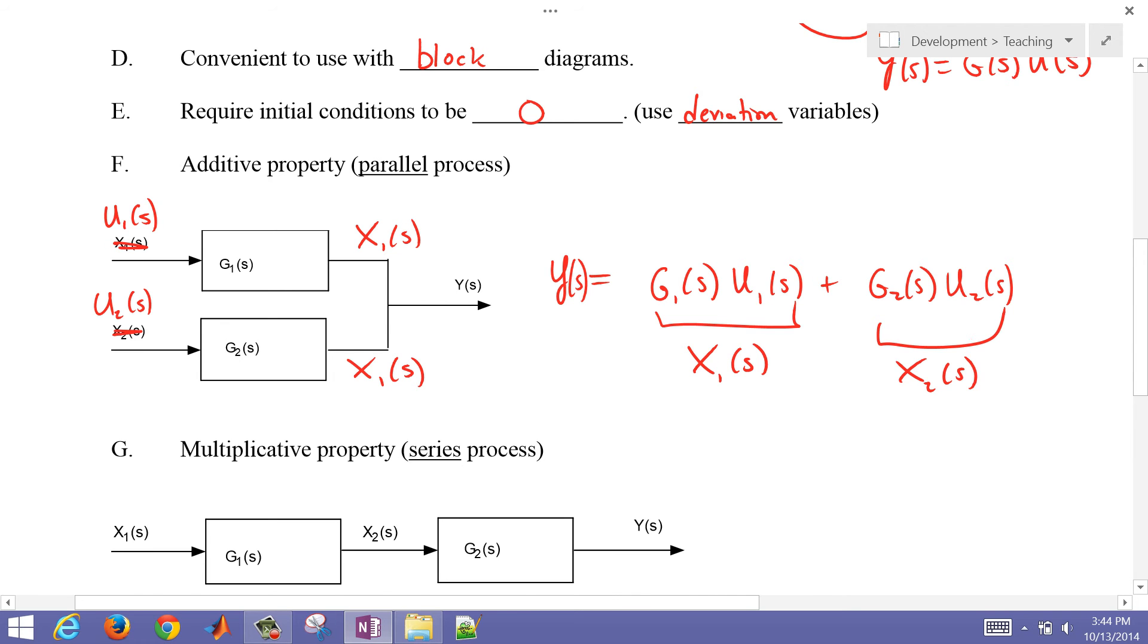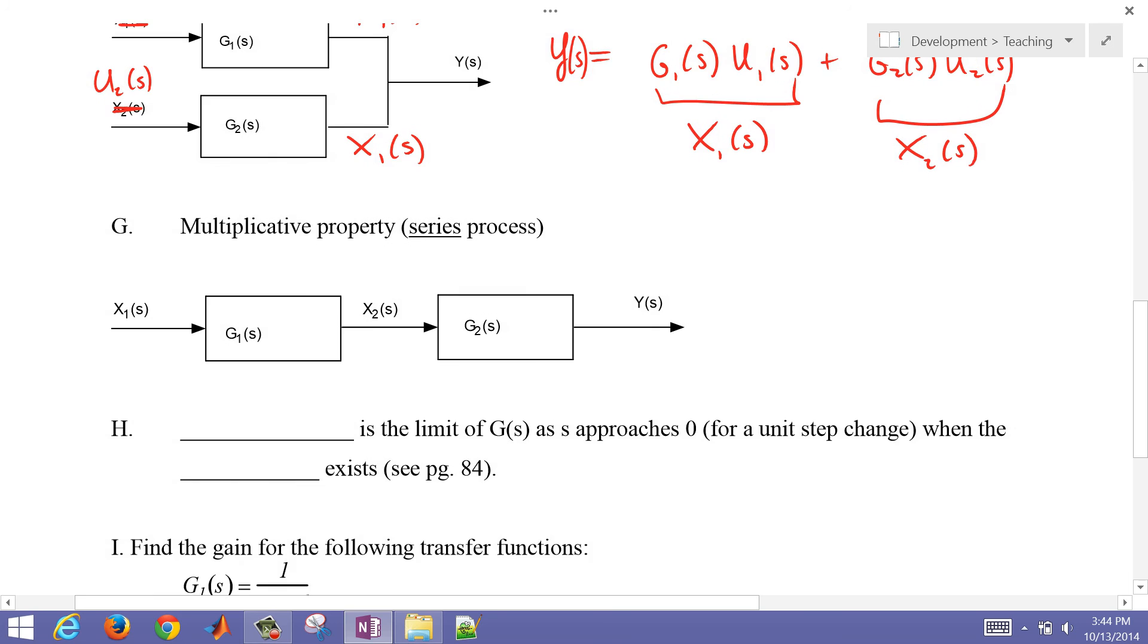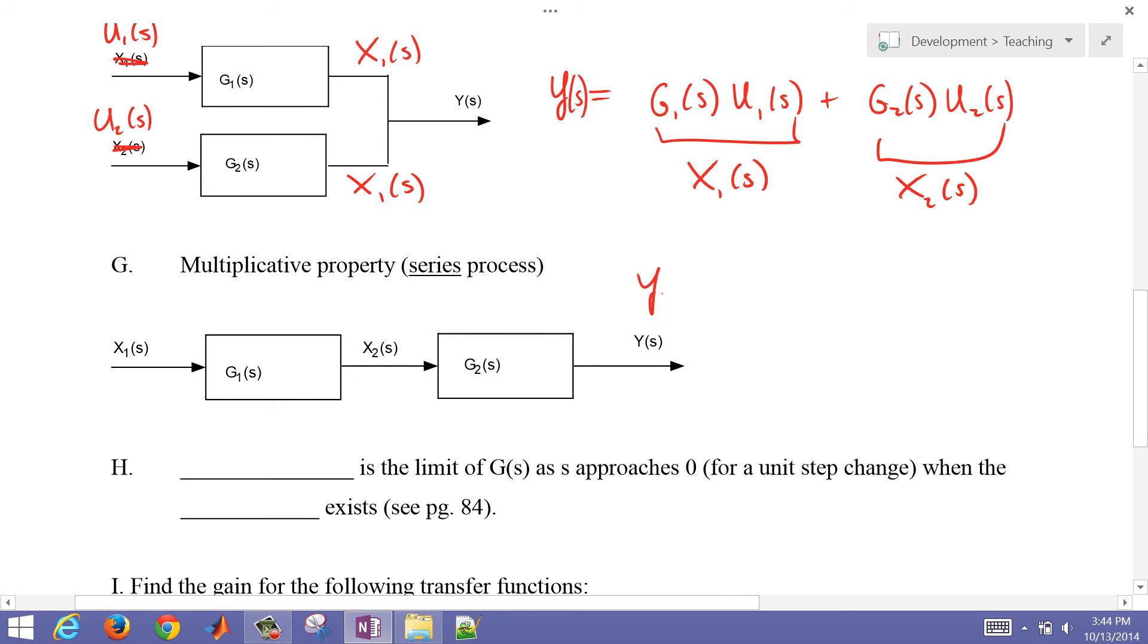We also have a multiplicative property. So if we have these in series, then it's just going to be y of s. Y of s is going to equal g2 of s times x2 of s. But then we also know that x2 of s is going to be equal to g1 of s times x1 of s.